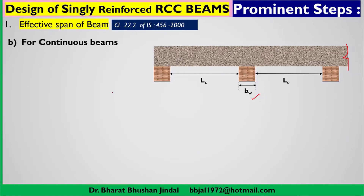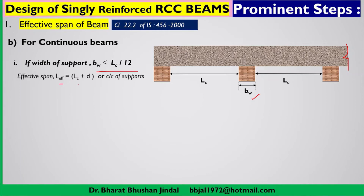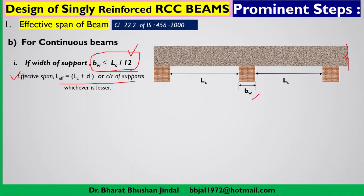The code specifies how to calculate the effective span length. The first condition is: if the width of the support VW is less than or equal to LC/12, then calculate L_effective = LC + d, or take the center-to-center support distance — whichever is lesser. This is the same approach as for simply supported beams and applies when the wall width satisfies this condition.